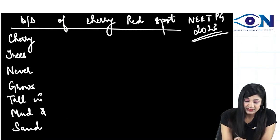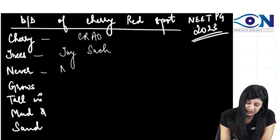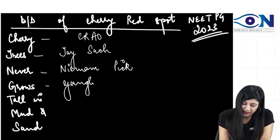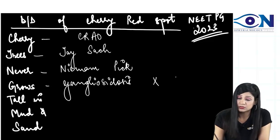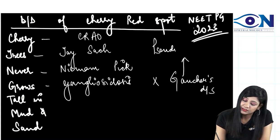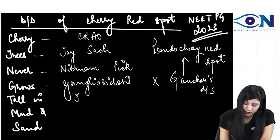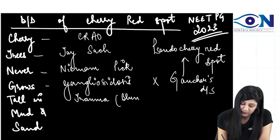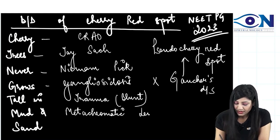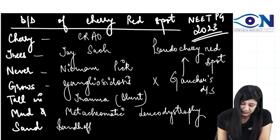Looking at the options: C is CRAO, T is Tay-Sachs disease, N is Niemann-Pick disease. Then we have gangliosidosis. Don't confuse with Gaucher's disease — Gaucher's disease gives you a pseudo cherry red spot, not a true one. Then T is for trauma, specifically blunt trauma. M is metachromatic leukodystrophy, and S is Sandhoff disease.